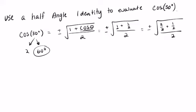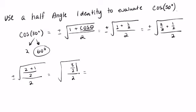Then I have plus or minus 2 plus 1 over 2, over 2. That's going to give me the square root of 3 over 2 divided by 2.